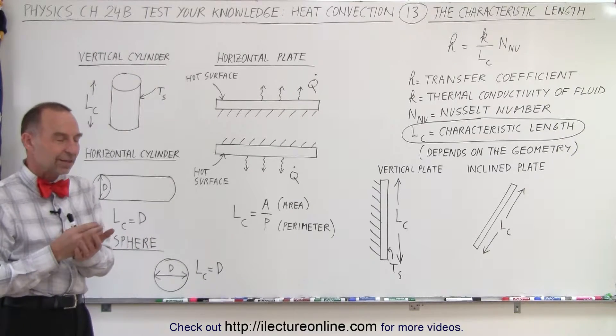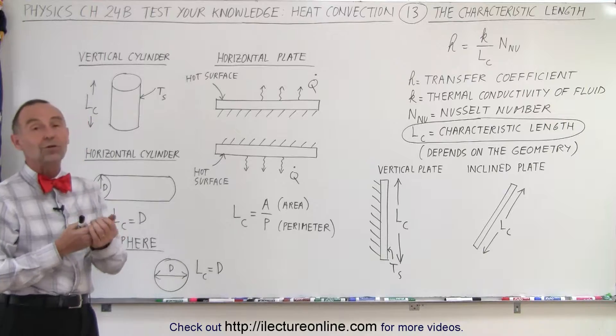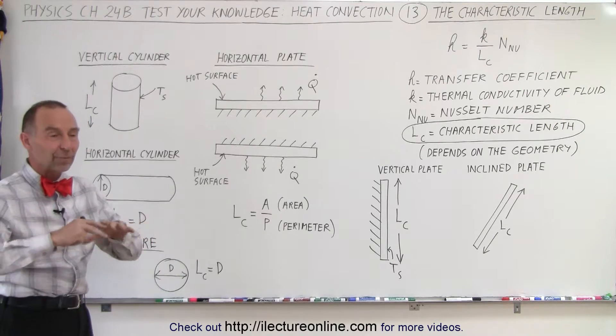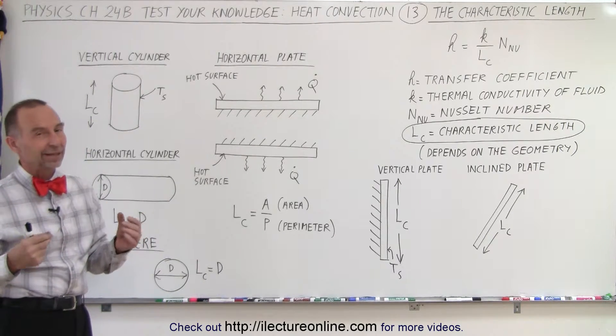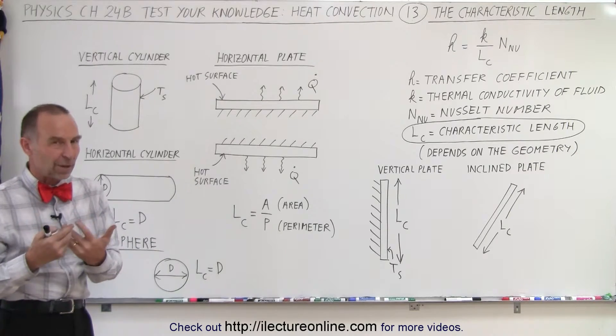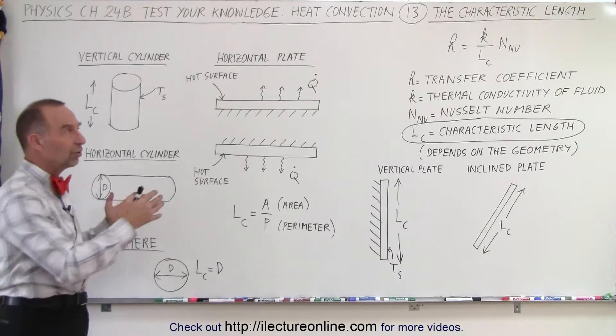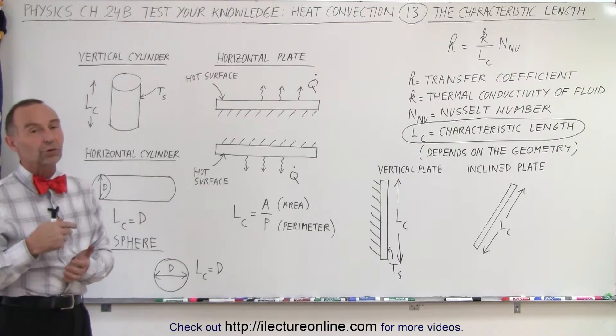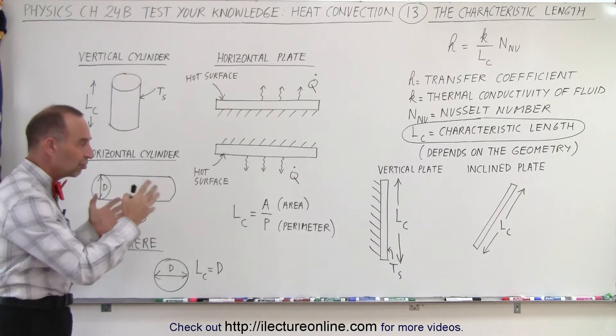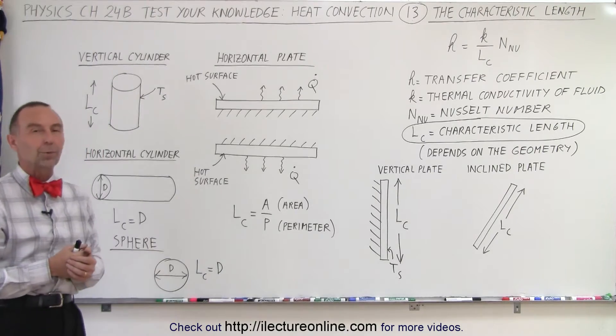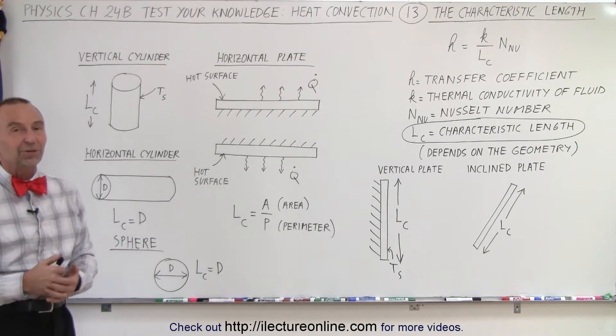But you will also see that the calculations that we use in order to find the heat flow from a surface due to convection, we always try to approximate as exactly as possible, but yes, they're just approximations. And these are what we call the typical values that we use for the characteristic length if our geometry is as is seen on the board. And that is how it's done.